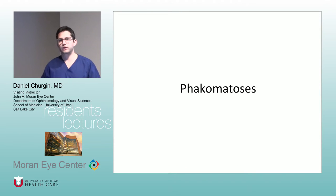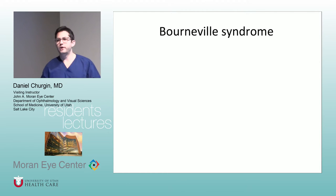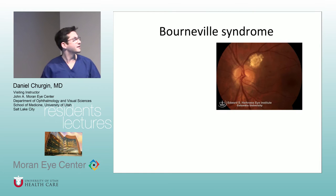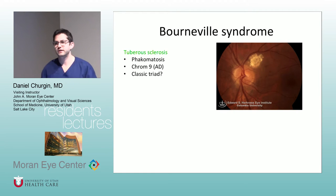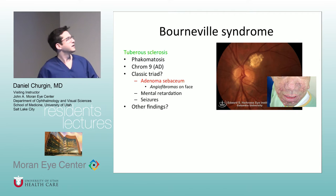The phacomatoses always show up, and it's always something obscure. It's never going to be like Lisch nodules with NF1 — it's always going to be something completely random. One thing that is high yield is knowing the different names of the different syndromes, because you can be totally thrown off by what they're talking about. Anyone know what Bourneville syndrome is? It's tuberous sclerosis. So they can throw out 'Bourneville syndrome' as one of the options on your test. There's a classic triad of adenoma sebaceum, mental retardation, and seizures.